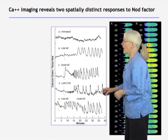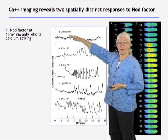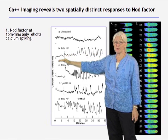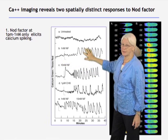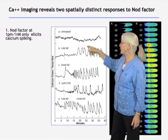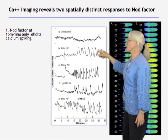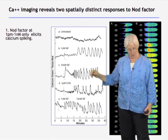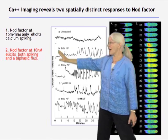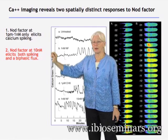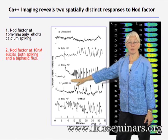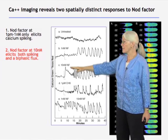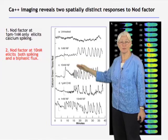First, comparing an untreated cell to the presentation of one nanomolar of nod factor, about 10 minutes after presentation you get these sharp upswings in calcium — calcium spiking. If you put in a higher amount of nod factor, 10 nanomolar, you get something more complex: a faster response. This turns out to be the tip flux of calcium coming in, and then calcium spiking happens at the same time.